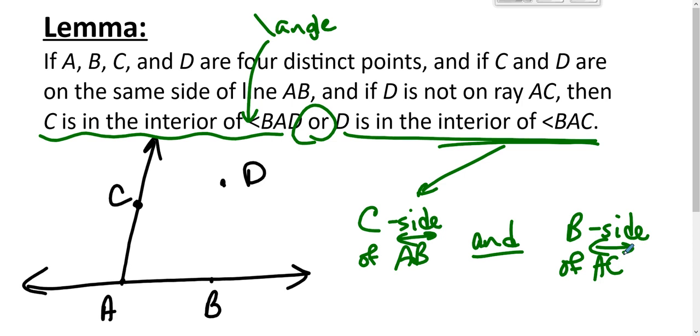Well, what sets that up for us? We know that C and D are on the same side of line AB, so we know that D is on the C side of line AB. That is true. Getting this part.